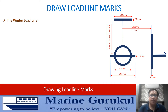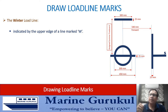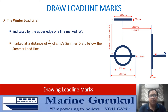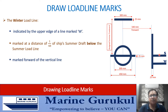The winter load line mark, applicable when the ship is in the winter zone, is indicated by the upper edge of a line marked with the alphabet W. The winter load line mark shall be marked at a distance of 1/48th of the summer draft of the ship below the summer load line. So from the upper edge of the summer load line, coming down 1/48th of the summer draft gives the upper edge of the winter load line. It is also marked forward of the vertical line.